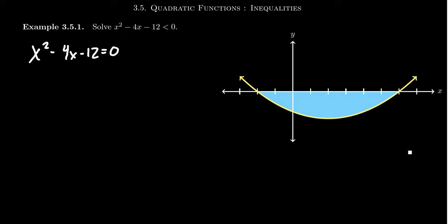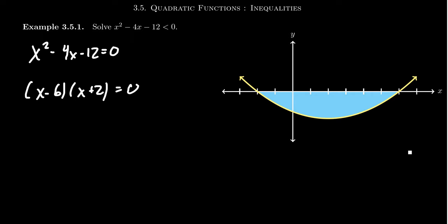We could complete the square, we could use the quadratic formula, or in this case, a very simple factorization is possible here, because we need factors of negative 12 that add to be negative 4. And so we can get away with having x minus 6 and x plus 2. Notice that negative 6 times 2 is negative 12, but negative 6 plus 2 is negative 4. And so this gives us two markers: x equals 6 or negative 2.